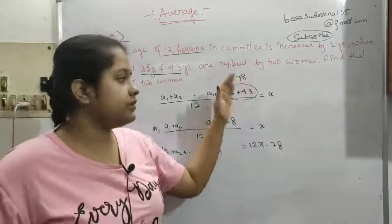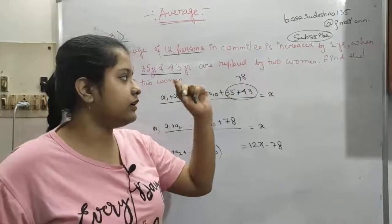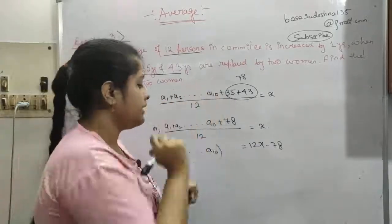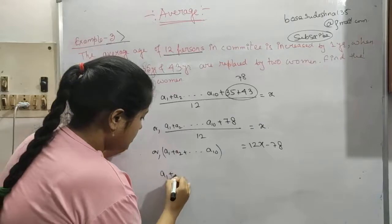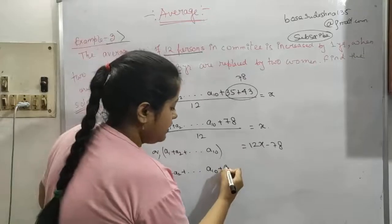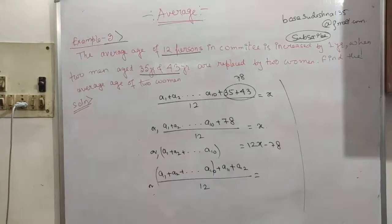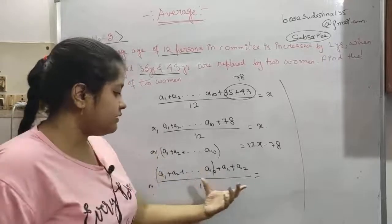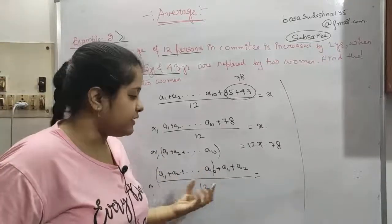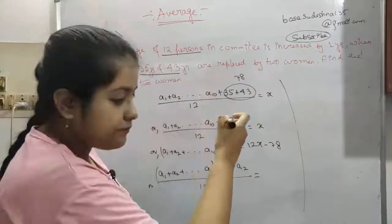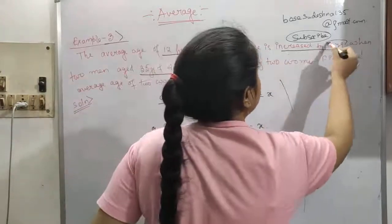These 2 men will be replaced by 2 women. We have to find the average of the 2 women who are replacing the 2 men. Now let us say the women added are a11 and a12. My video got stopped, sorry for that. Now this is our new average — a1 till a10 is the same, the 2 men are replaced with 2 women, divide by 12.